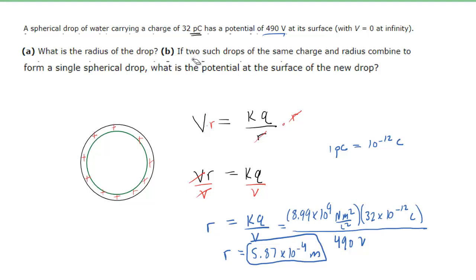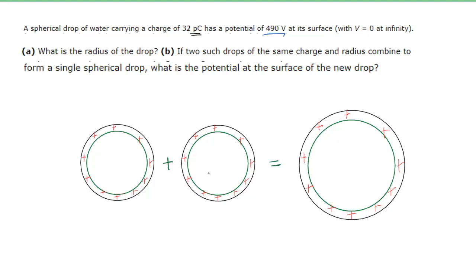In part B, we're going to take two of these spherical drops of water and combine them, and then determine the new potential at the surface of that combined drop. The key to solving part B is to understand that when we combine two identical spherical drops of water, they're going to create one slightly larger spherical drop. It's going to be necessary to calculate the radius of that new spherical drop of water, as well as the total amount of charge on it. Once we have those two values, we can simply go back to the equation for the electric potential at the surface, which again was K times Q divided by R. So as long as we can figure out the new value of Q and the new value of R, we'll be in good shape to calculate the electric potential.